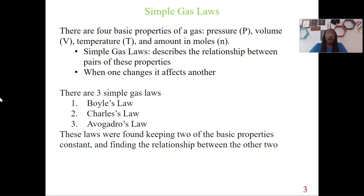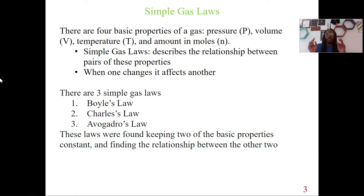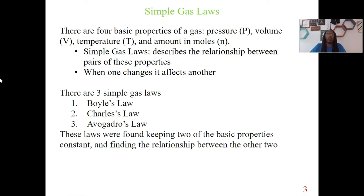So there are four basic properties of a gas: pressure, volume, temperature, and moles — we use N for that value. Simple gas laws are basically describing a relationship between these four different properties. Say you have a pair of properties — one might increase and the other might decrease, or might increase as well. When one changes, it's going to impact the other, and that's what simple gas laws is about: describing that relationship.